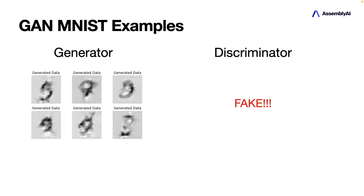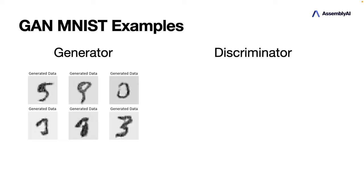At some point the generator gets better and better, and the discriminator might be tricked and say this is actually real data. The data is still not perfect, but the discriminator also still has to improve. This continues, and both sides get better and better. Eventually we should get generated data that is not easily distinguishable from the original data. Now let's jump to the code and see how we can implement this.